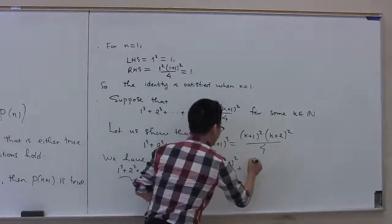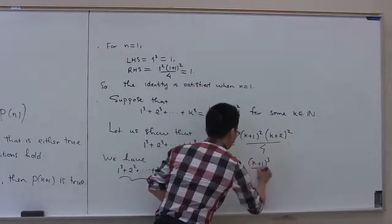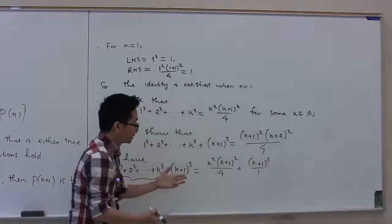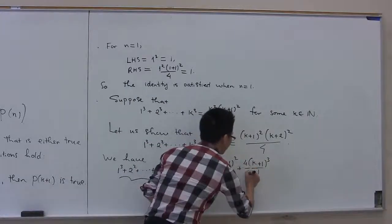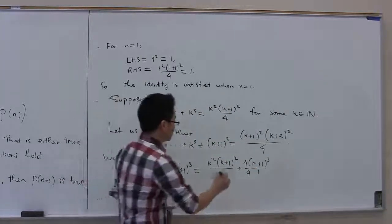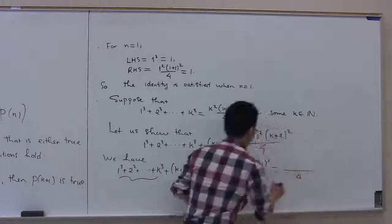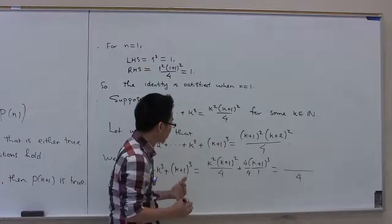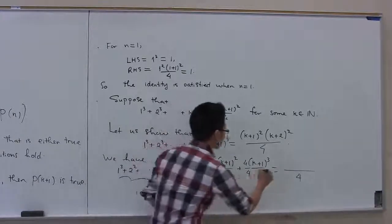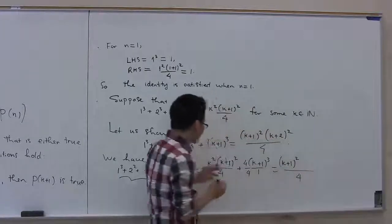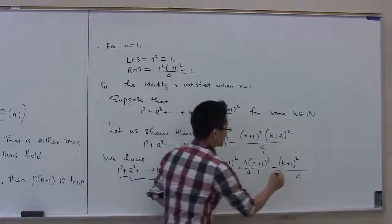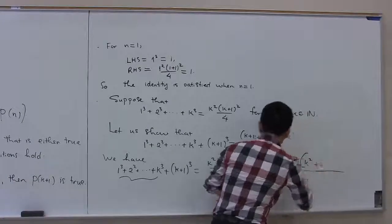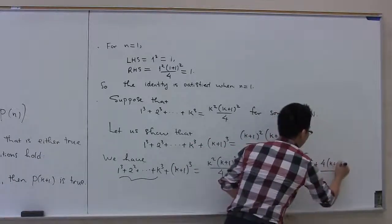So we have k squared times (k+1) squared over 4 plus (k+1) to the third. The common denominator is 4, so we combine the terms. The common factor of the numerator is (k+1) squared, so we factor out (k+1) squared. Inside the parentheses we get k squared plus 4 times (k+1).